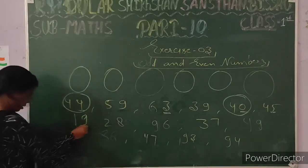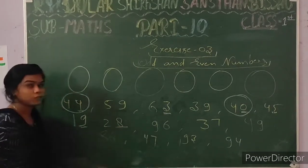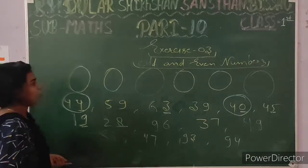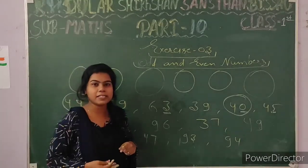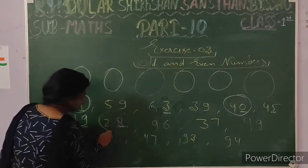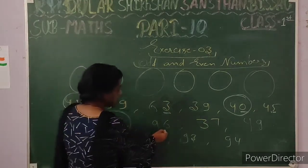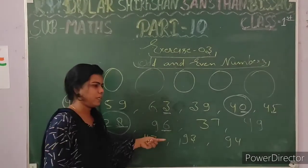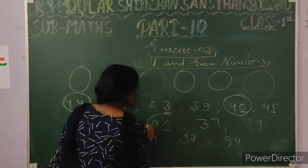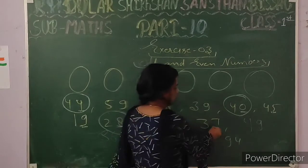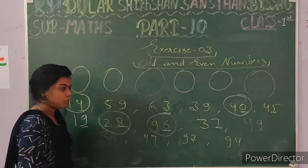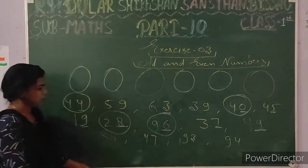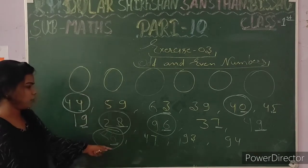For 28 — the ones digit is 8. Always remember the easy concept: ones digits 0, 2, 4, 6, 8. We don't need to divide — we easily recognize using this short trick. So we encircle 28. Then 96 — the ones digit is 6, which is in our definition of even numbers, so we encircle 96. For 37 — 7 is not even, this is odd, so we cannot encircle it. For 49 — 9 is also not even. For 86 — the ones digit is 6, so we encircle 86.